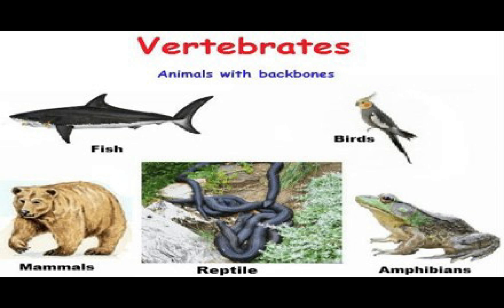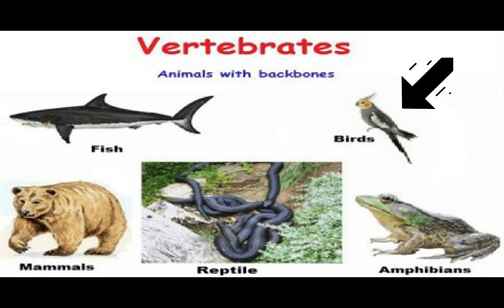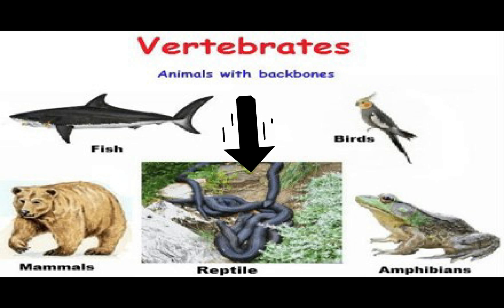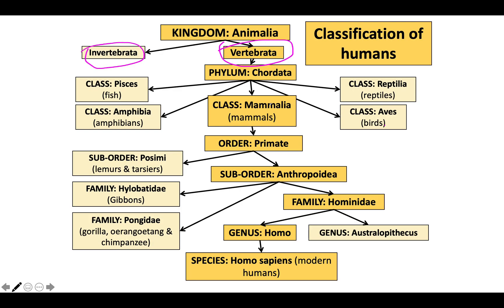The vertebrates themselves can be divided into five classes: fish, amphibians, birds, reptiles, and mammals. One of the orders under mammals is the order Primates — and this is where we belong. We are going to expand on this particular order.